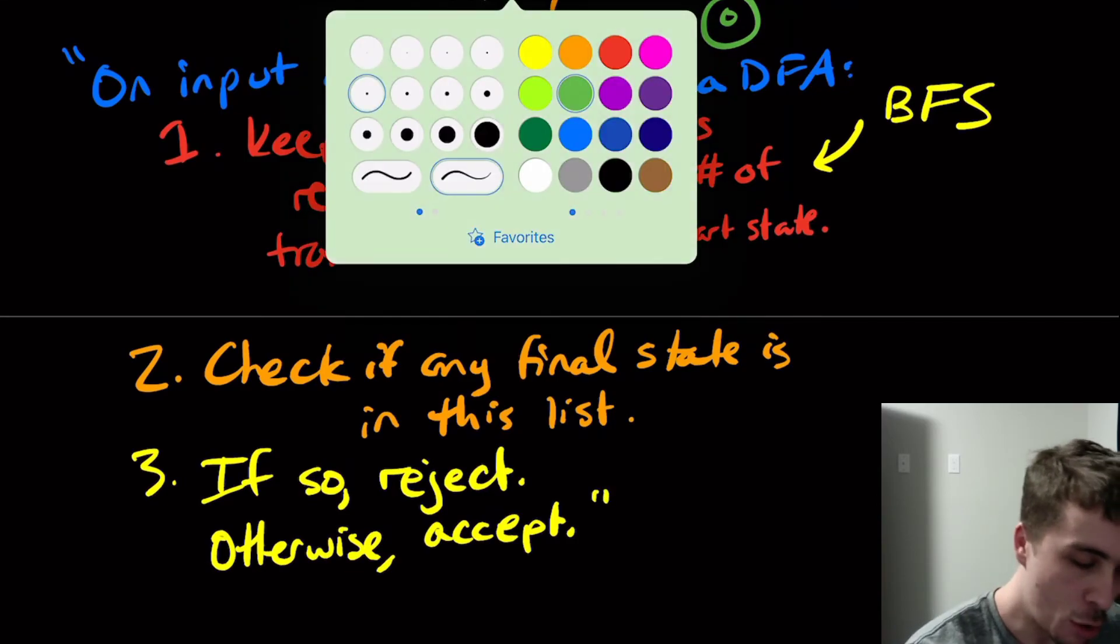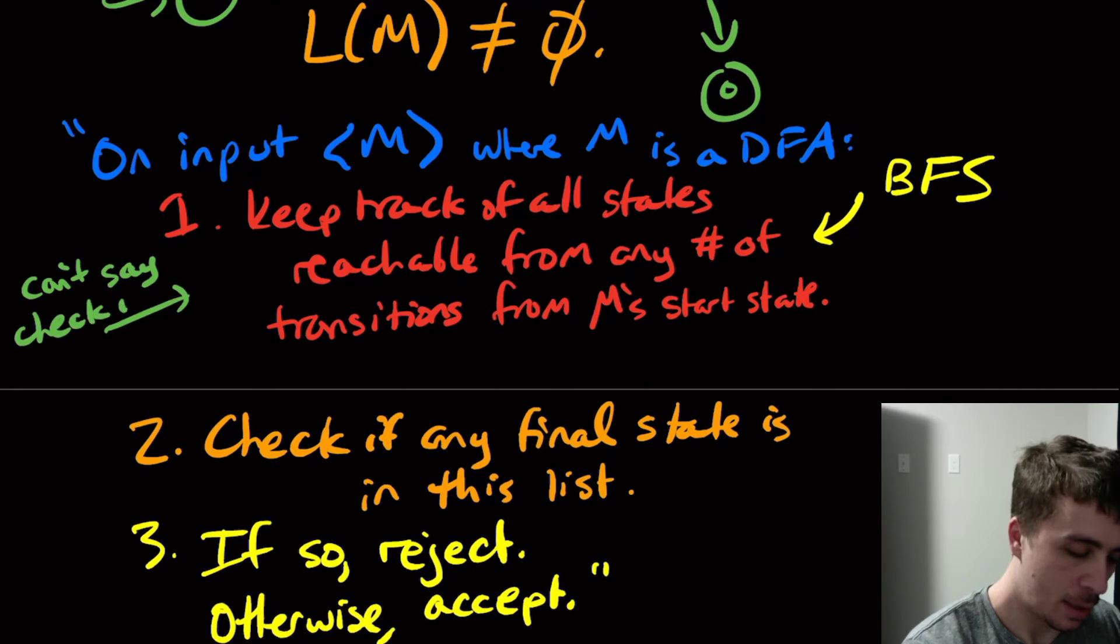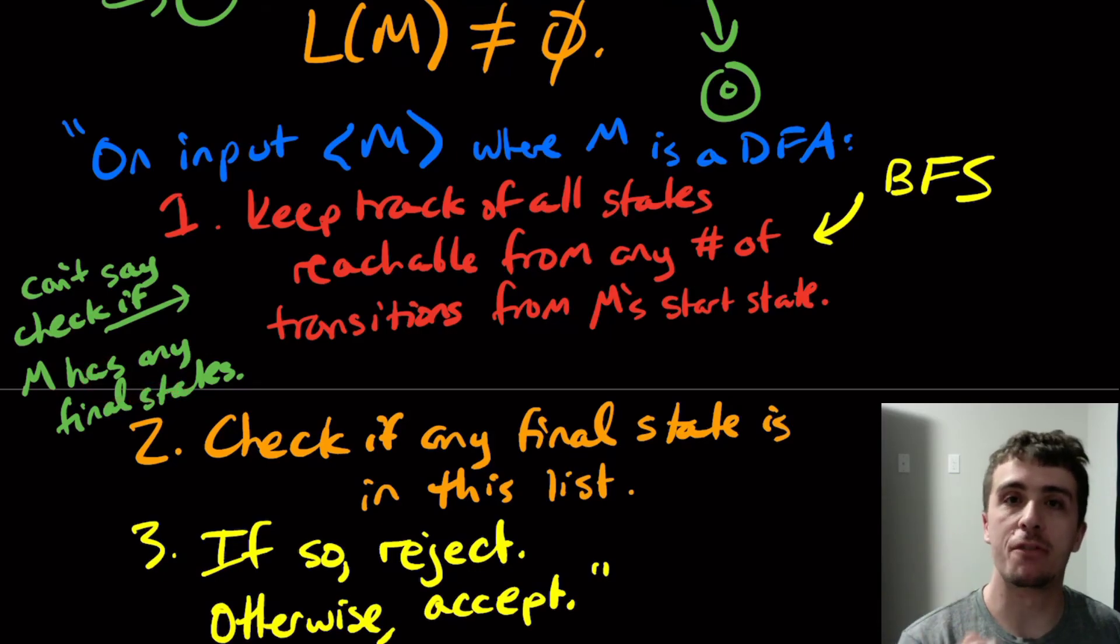One thing to note here is we can't just say check if M has any final states. We can't make that check, we got to check for reachability. Why is that the case? Because if we just only check for if it has final states, there could be some final states that are not reachable whatsoever from the start state. And then we would get a different answer than the one we actually wanted.